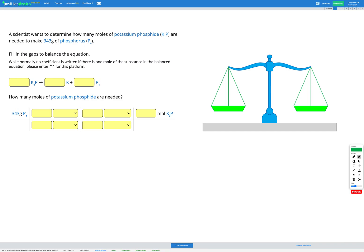In this question, a scientist wants to determine how many moles of potassium phosphide K3P are needed to make 343 grams of phosphorus P4.